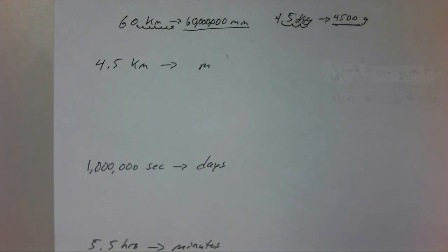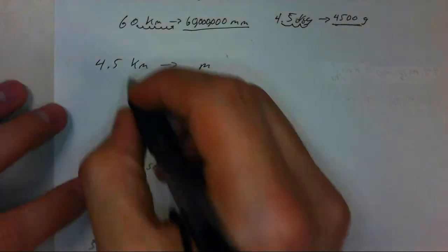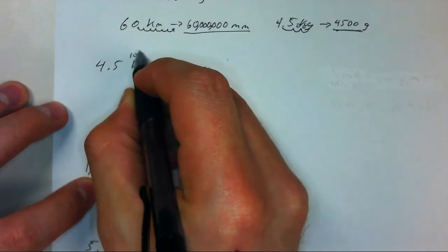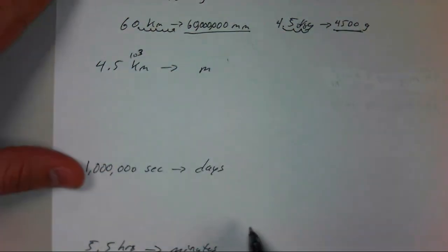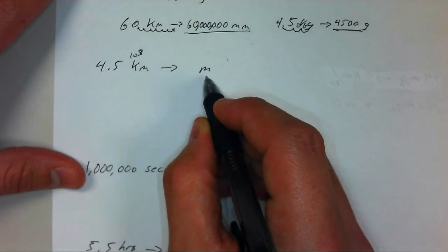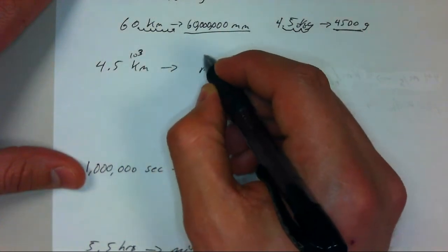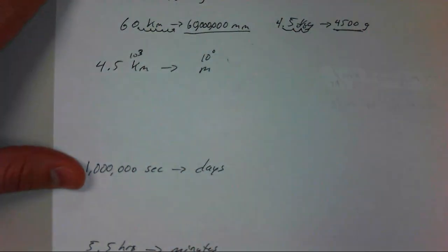First, with moving the decimal, let's just show you how that works. Starting with kilometers, that's where we're coming from. Kilo, that's 10 to the third. And we're going to meters, which is 10 to the zero, that's our base unit.